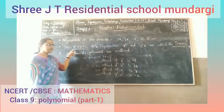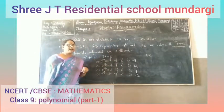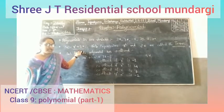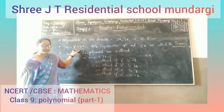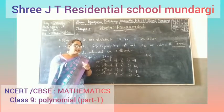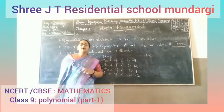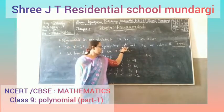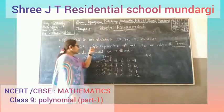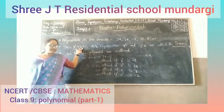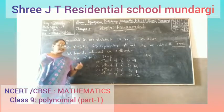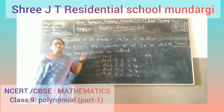Let's take another example: x squared plus 2x. This expression is also a polynomial. In this polynomial, x squared and 2x are called terms. So x squared is one term and 2x is another term.